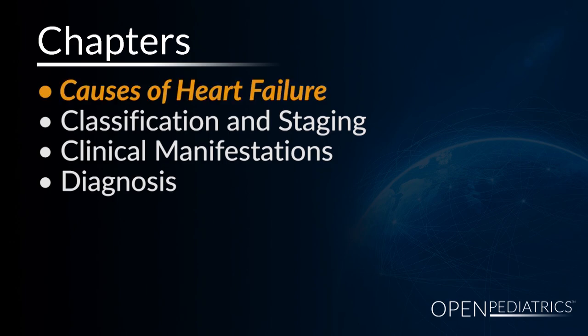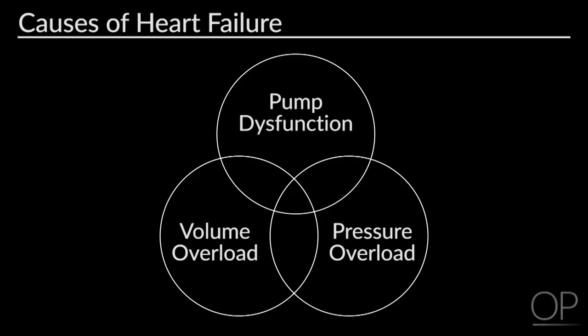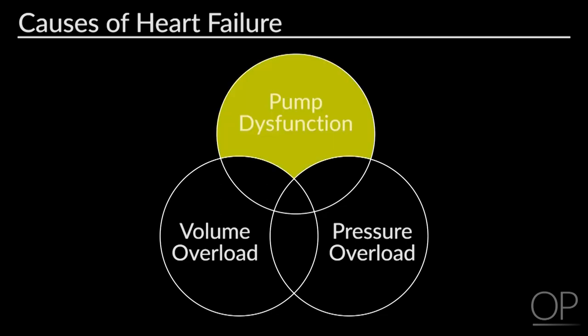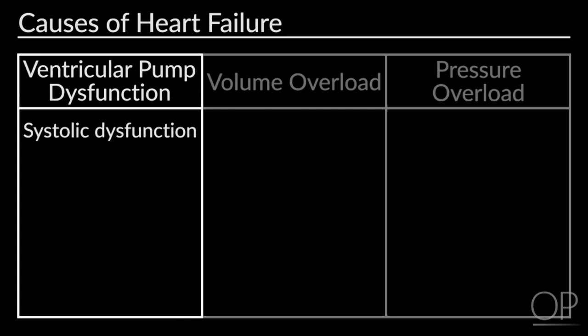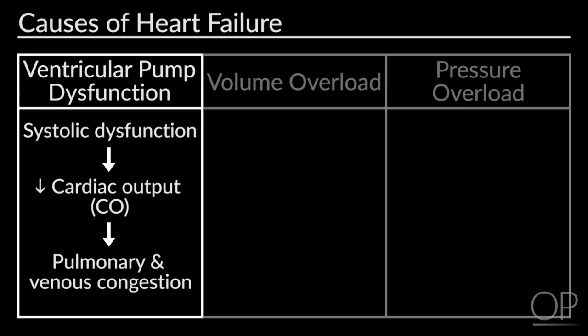There are three main causes of heart failure in infants and children, starting with ventricular pump dysfunction, otherwise known as systolic dysfunction. The heart functionally is a pump, whether it has two ventricles or single ventricle anatomy. If the pump has any dysfunction, you're going to have a decrease in cardiac output, as well as sequelae of backup pressure resulting in pulmonary and systemic venous congestion.